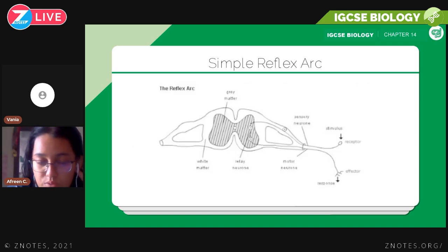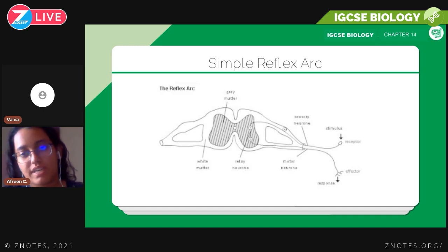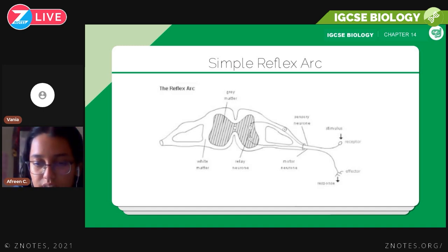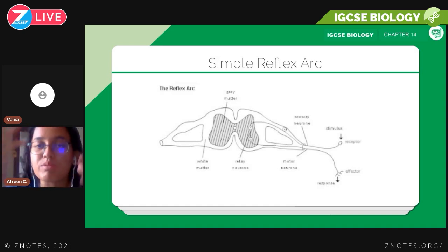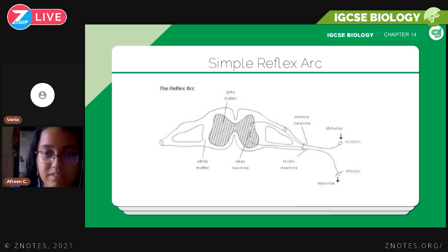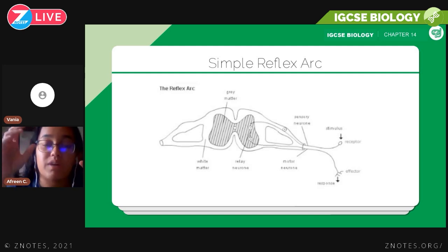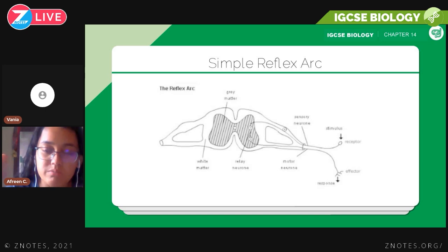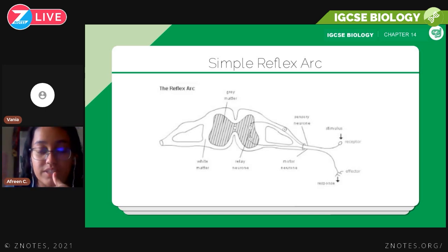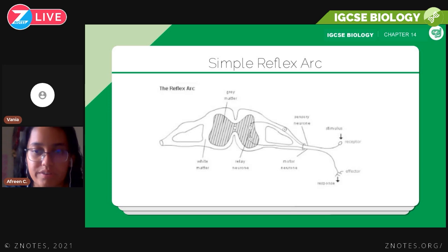This diagram explains the pathway: the stimulus affects and stimulates the receptor, the impulse is carried by sensory neurons to the central nervous system, where relay neurons carry the impulse to the motor neurons, which then trigger the effectors to respond to the stimulus.